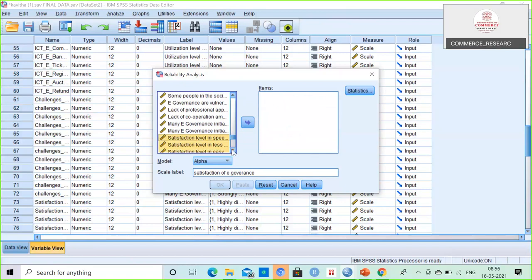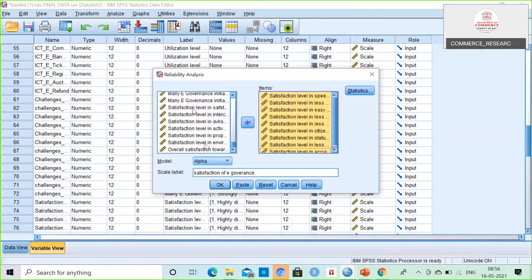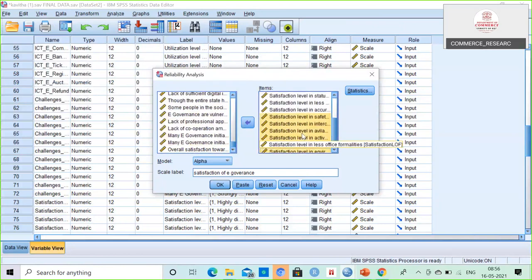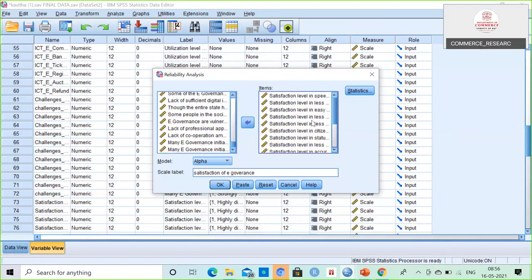All the satisfaction variables are there. One more thing, overall satisfaction. So all the satisfaction scales are there. The construct is called satisfaction.